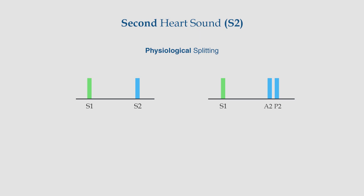Now let's talk about the splitting of S2 in a bit of detail. S2 has aortic and pulmonary components, denoted as A2 and P2, and can be heard separately normally. This physiological splitting of S2 occurs because the aortic valve closes before the pulmonary valve, as left ventricular contraction slightly precedes that of the right ventricle. Physiologically, this splitting increases at end inspiration, because of the increased venous filling of the right ventricle during inspiration, which delays pulmonary valve closure.